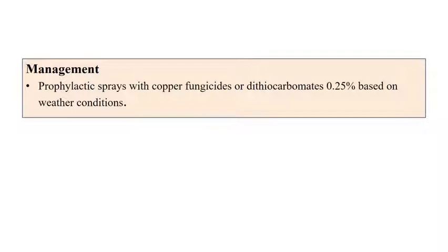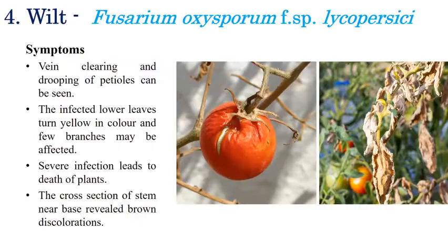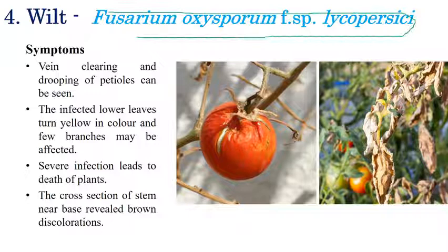For management of late blight, prophylactic spraying of copper fungicides or dithiocarbamates at 0.25% is recommended when cool or cloudy weather is observed. Phytophthora favors cool temperatures — below 18°C. In potato, it requires 12°C for zoospore formation and around 18°C for sporangial germination. Prophylactic application of copper fungicide or dithiocarbamates at 0.2% provides good protection.